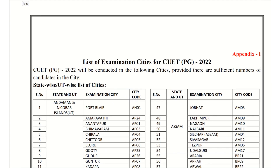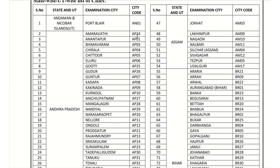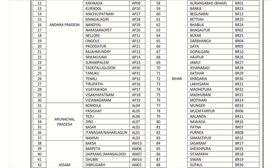These are the list of cities in each and every state — cities and city codes which you need to note before filling the application form. Based on that, you have to choose at least four. It's not like you must choose all four — if you need only one, you can choose only one. But the problem is, in case that city does not have a good number of candidates, it's going to be merged with some other city. So always choose four, which is most appropriate for your current location.